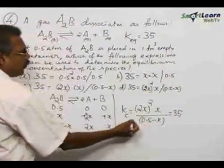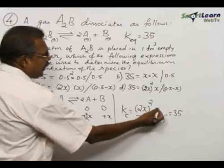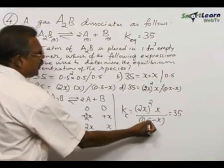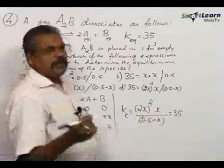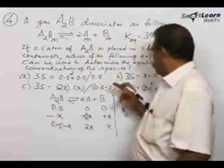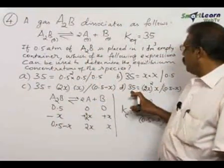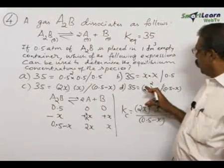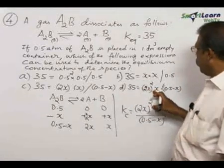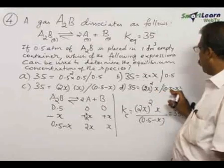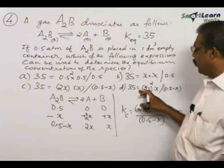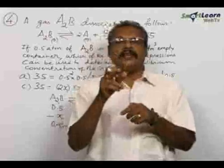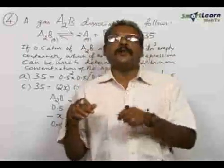35 = (2x)² × x / (0.5 - x). So, out of the 4 options, option D: 35 = (2x)² × x / (0.5 - x). That is the correct one. Therefore, you have to go for option D, that is as per norms and as per rules.